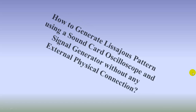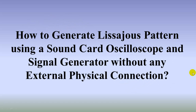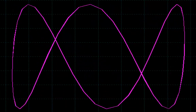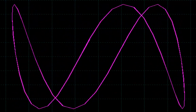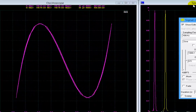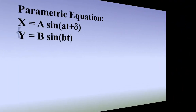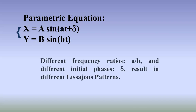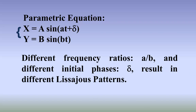How to generate Lissajous patterns using a sound card oscilloscope and signal generator without any external physical connection? Lissajous patterns, also known as Lissajous figures, Lissajous curves, or XY plots on an oscilloscope, are plotted based on two parametric equations. Different frequency ratios A over B, and different initial phase differences delta, result in different Lissajous patterns.